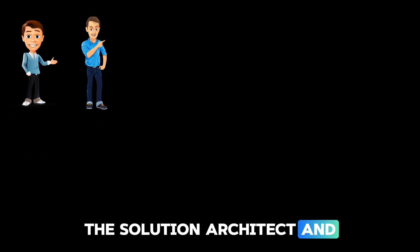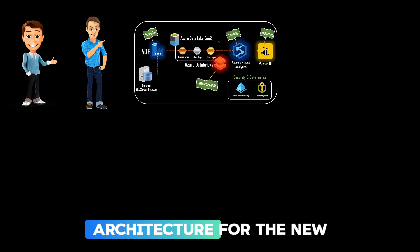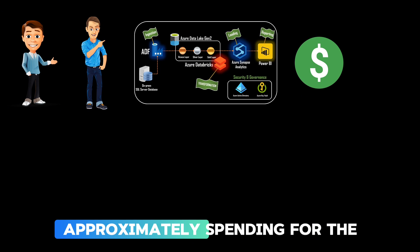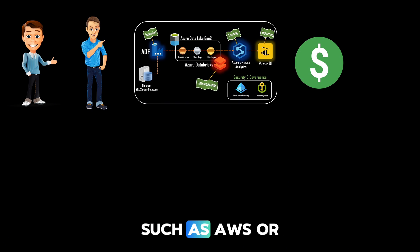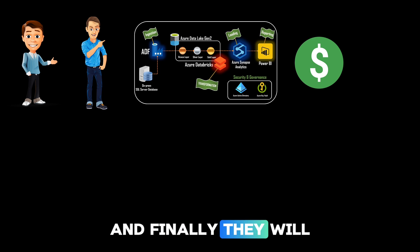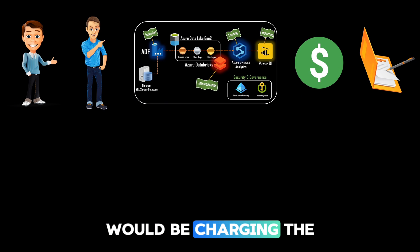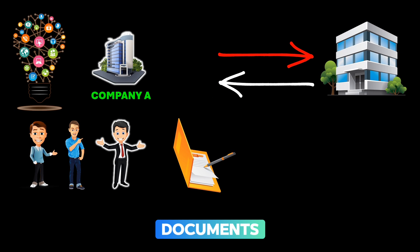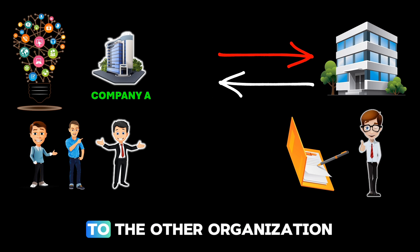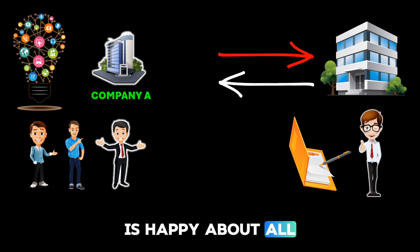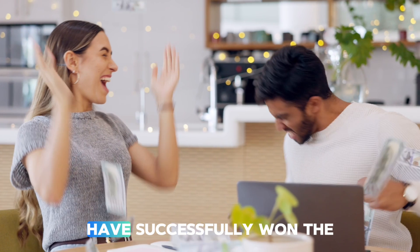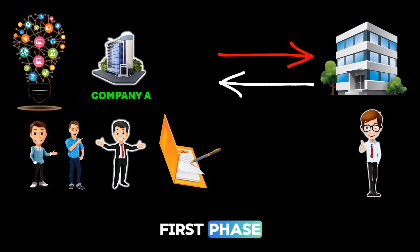In this final stage, the solution architect and the data engineer work together on creating a modern data platform architecture for the new solution. They also work on the platform cost — estimating how much the organization would approximately spend on the platform every month to cloud providers such as AWS, Azure, or GCP. Finally, they work on the costing documents — the total cost Company A would charge the organization to build the platform, with time frames. Once done, all required sales documents and contracts are signed by Company A and sent to the other organization. When the organization is happy with the submitted details, they countersign the contract, meaning Company A has successfully won the contract — marking the end of the pre-implementation phase.